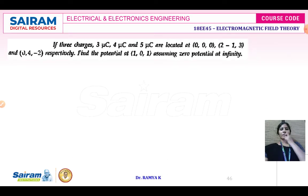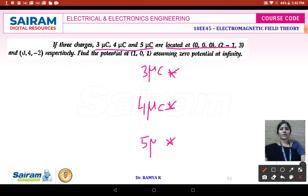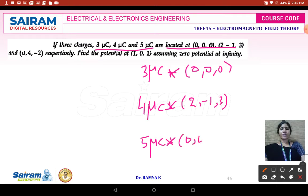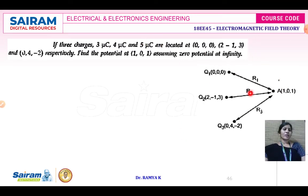Next problem: three charges — Q1 = 3 microcoulombs, Q2 = 4 microcoulombs, Q3 = 5 microcoulombs — are located at (0,0,0), (2,-1,3), and (0,4,-2) respectively. We need to identify the potential at point P located at (1,0,1). The total potential at P is the superposition: VP = VP1 + VP2 + VP3, contributed by Q1, Q2, and Q3.